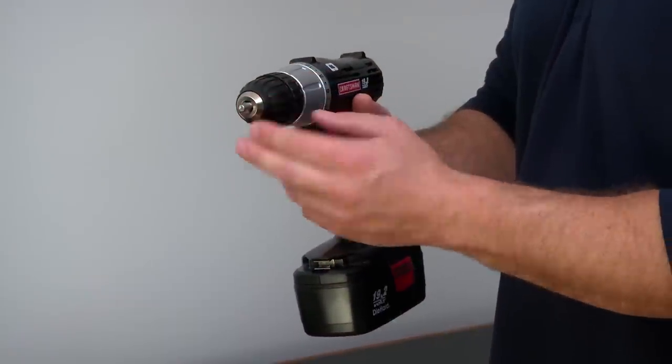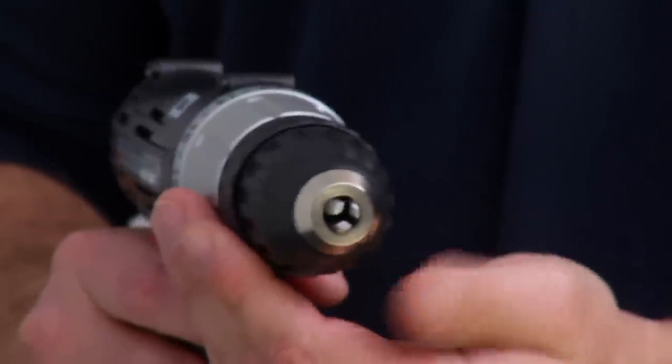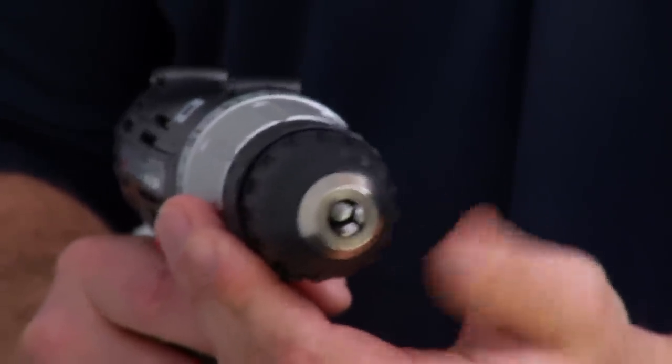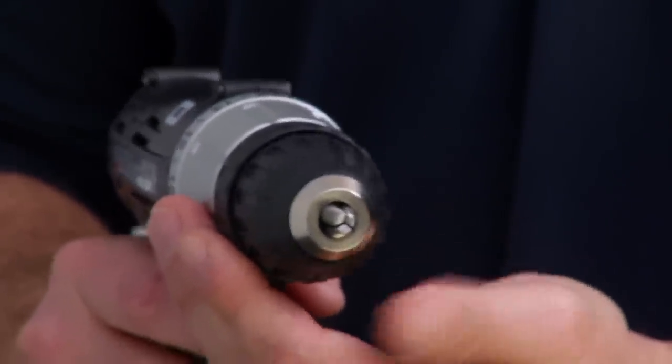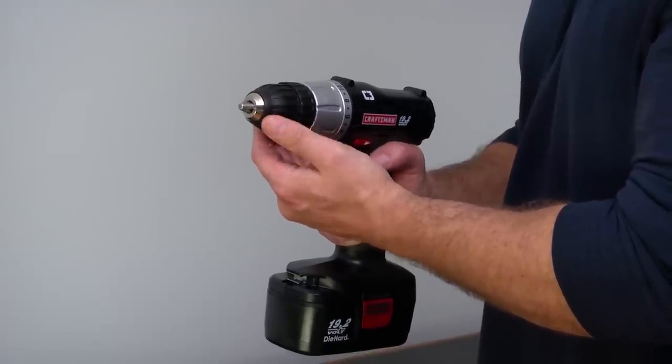This part of the drill is called a chuck. These jaws inside the tip hold the bit in place as you loosen or tighten the chuck. A drill with a keyless chuck tightens and loosens by twisting the collar with your hand. It makes changing the bits quick and easy.